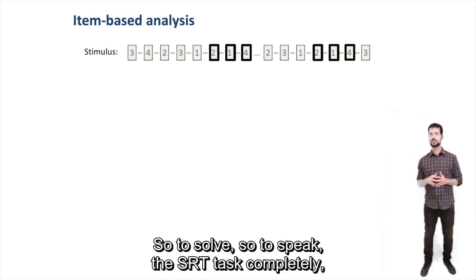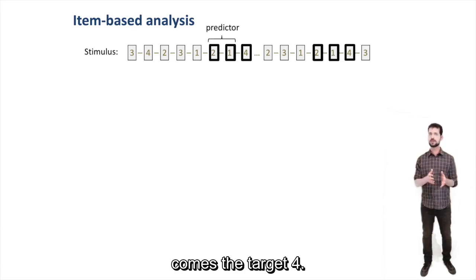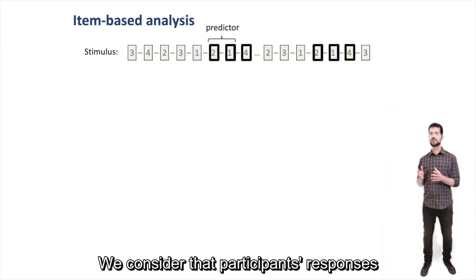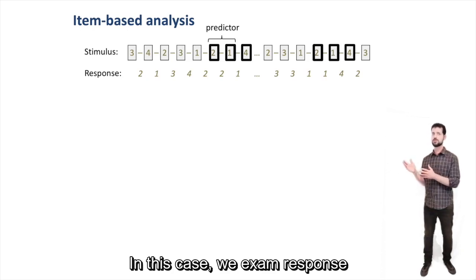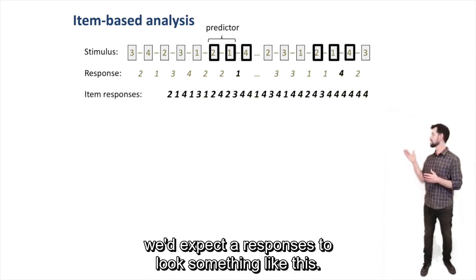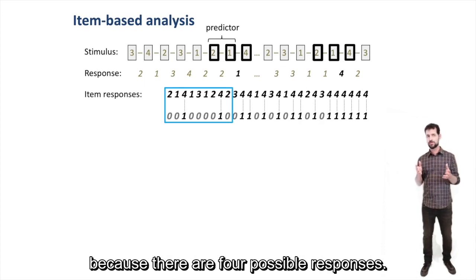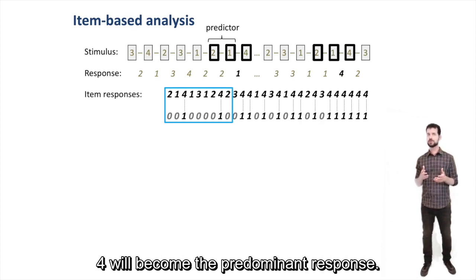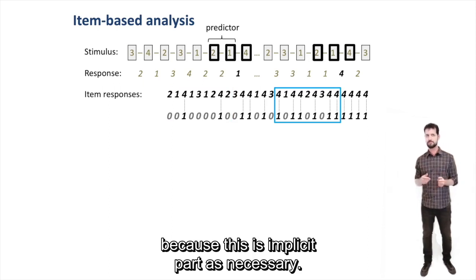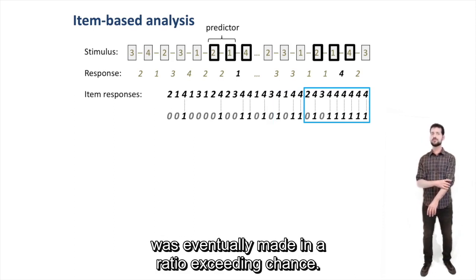So to solve the SRT task completely, one only has to learn 12 responses to 12 predictors. Say in the case of 214, one has to learn that after 21 comes target 4. So for each triplet repeating stimuli, we looked at where participants fixated during the next ISI. We consider that the participant's response to the two stimuli. In this case, we examine response to all appearances of 21. If a participant had indeed learned the 214 triplet, we'd expect response to look something like this. At the beginning, she'd respond 4 around 25% of the time, as would be expected by chance, because there are 4 possible responses. But then with practice, 4 would become the predominant response. There would never be an aha moment from which point 4 would always be made, because this is implicit, not explicit learning. And the final rate of producing 4 would also not necessarily be 100%, but what's important is whether that response was eventually made in a ratio exceeding chance.